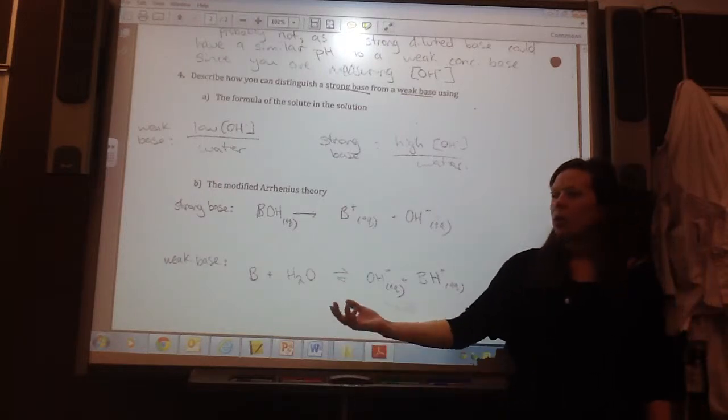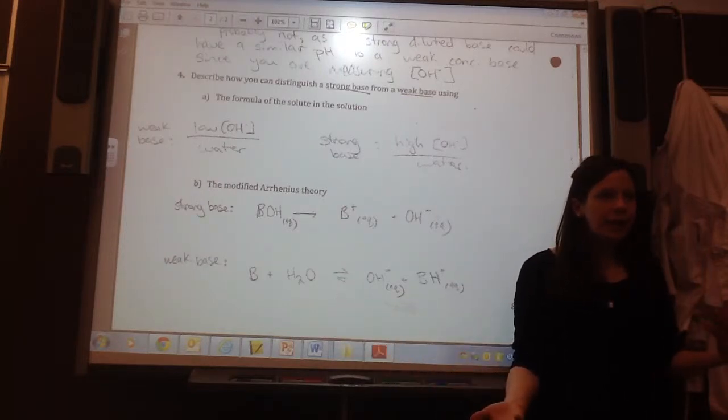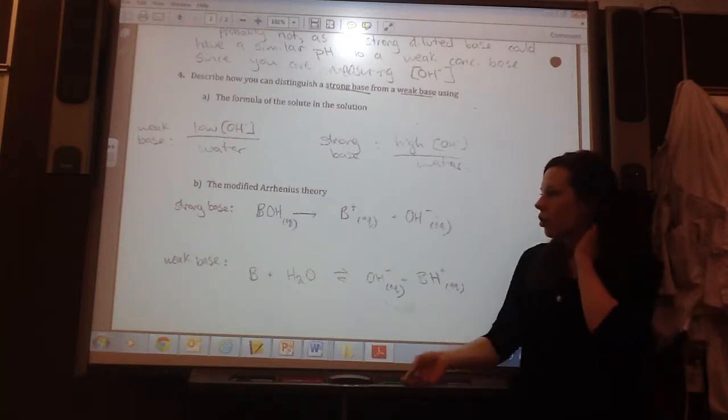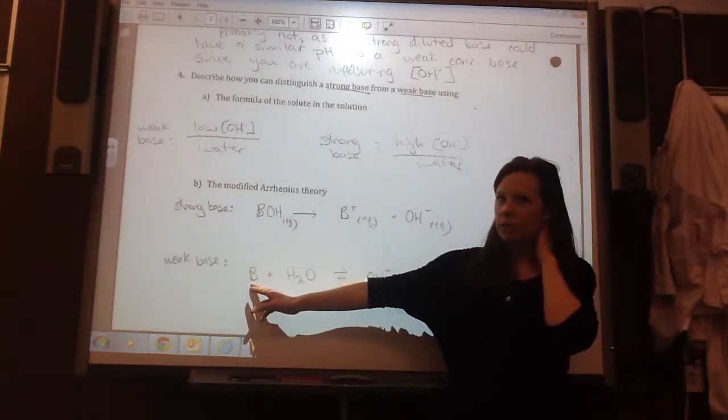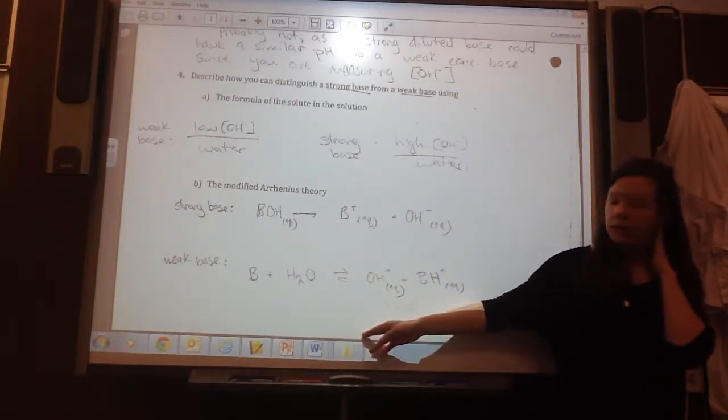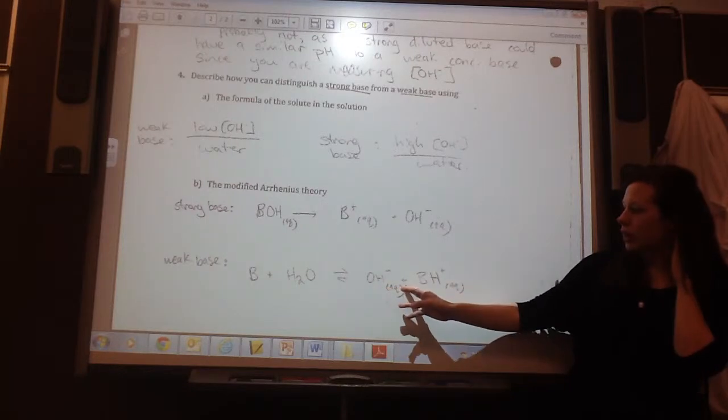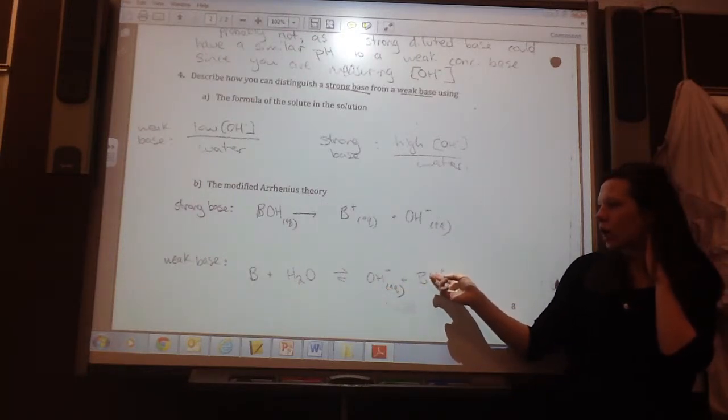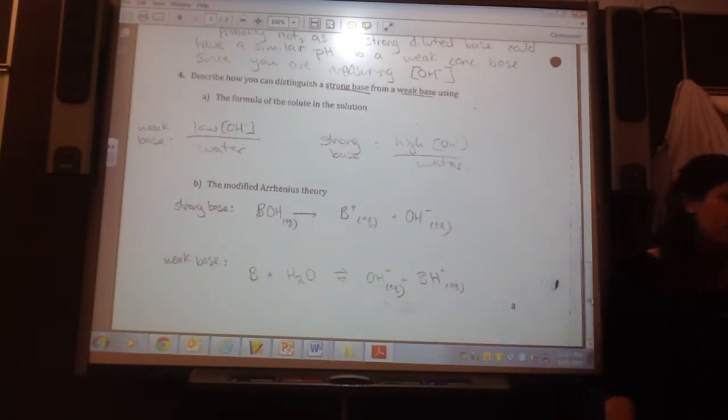A weak base, however, because that's our modified arrhenius, is explaining these bases that don't have an OH in it. So, if I just think about B, a base, plus water, gives me equilibrium arrows, because it's weak, and makes hydroxide ions plus BH+, because it's like, an H from the water got attached to the B there.